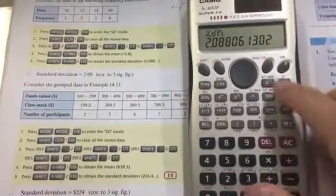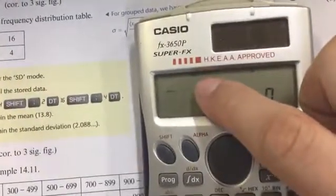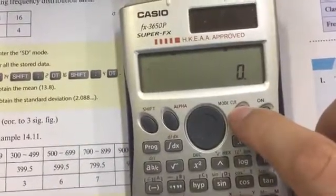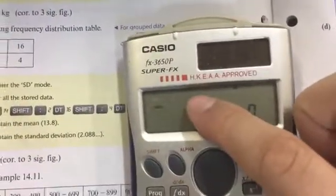If you want to exit, this is in SD mode. To exit, press Mode and press 1, and the SD letter will disappear.